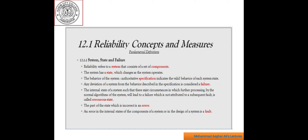The environment of a component is the system of which it is a part. The way the components of a system are put together is called the design of the system. Reliability refers to a system that consists of a set of components. The system has a state which changes as the system operates.